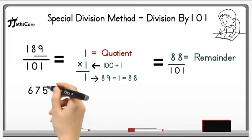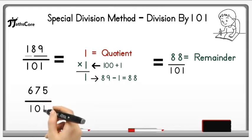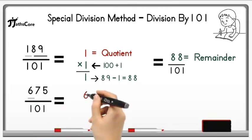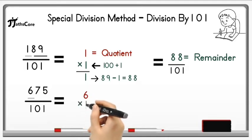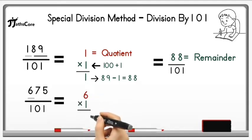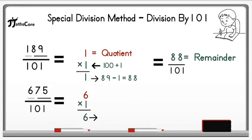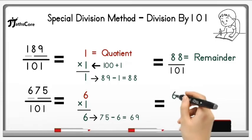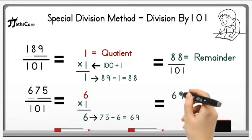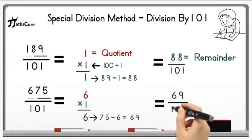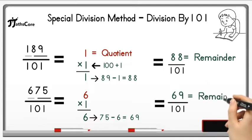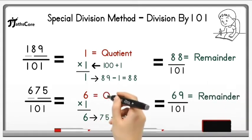The second example is 675 divided by 101. Write down 100 plus digit 6 here and multiply it by 1, because if we add 1 to 100 we get 101. So 6 multiplied by 1 is equal to 6. Subtract this 6 from 75: 75 minus 6 is equal to 69. Divide 69 by 101 — it is not possible because 69 is less than 101. So 69 is the remainder and 6 is the quotient.